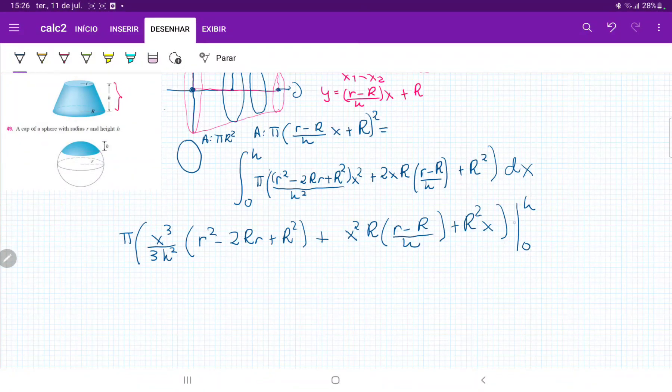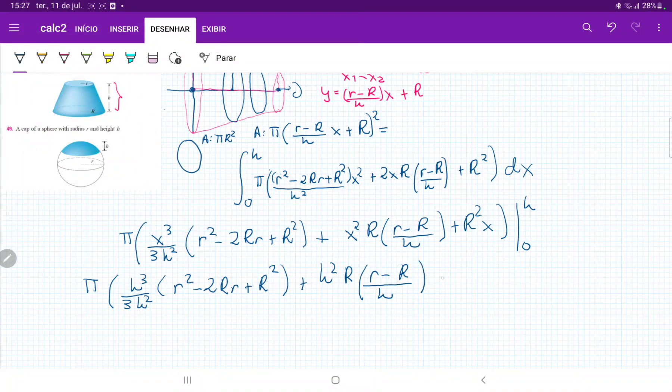So we only have to plug in h. So it's going to be pi times h cubed over 3h squared, we're plugging in h whenever we find x, times r squared minus 2 capital R little r plus R squared, and then plus h squared, h squared r times r minus capital R, and then plus R squared h.